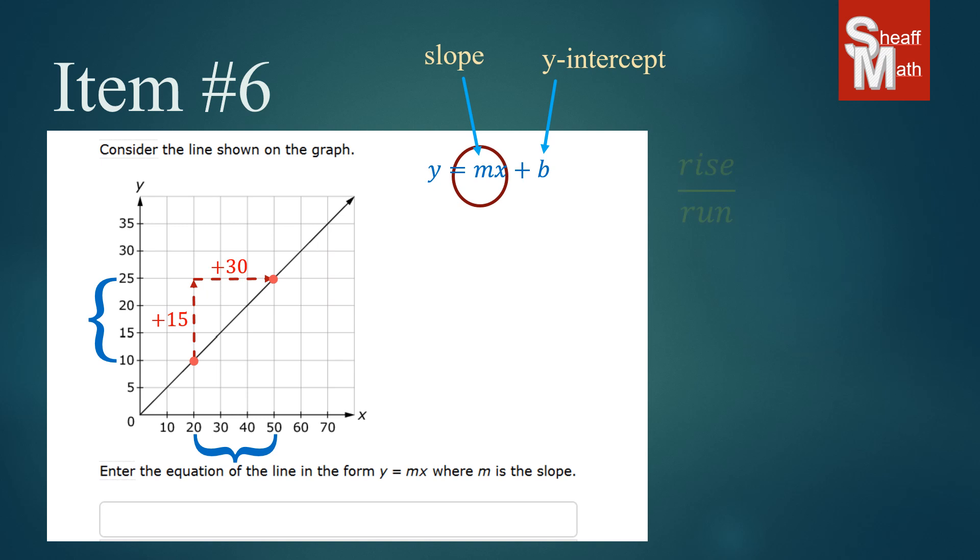So we're going to write our slope rise over run and that is up 15 over 30 and that simplifies to one half. So we found our slope and we can put that in our equation.